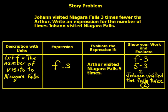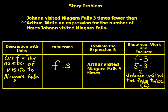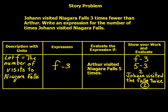Johan visited Niagara Falls three times fewer than Arthur. Write an expression for the number of times Johan visited Niagara Falls. Let F equal the number of visits to Niagara Falls Arthur made. We do F minus 3 because Johan visited three times less. If Arthur visited five times: F minus 3 equals five minus 3 equals two. Johan visited Niagara Falls twice. Great job today — go ahead and complete your exit ticket. If it went a bit fast, rewind and make sure you have all the information you need. Have a great day.